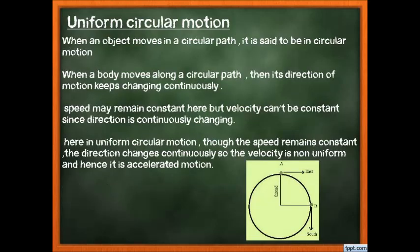The next topic is uniform circular motion. We have studied uniform speed, uniform motion, uniform velocity, and uniform acceleration. Now comes uniform circular motion. When an object moves in a circular path, it is in circular motion. When a body moves along a circular path, its direction of motion keeps changing continuously.